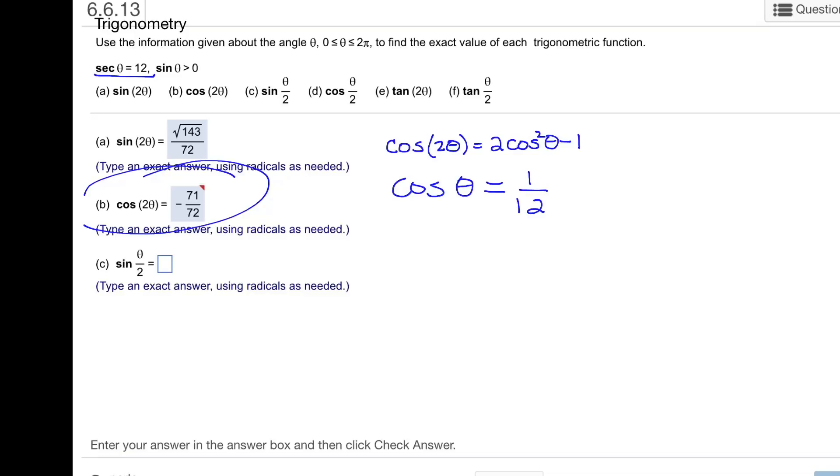So now I can just put that into the formula, and I've got 2 times 1 over 12 quantity squared minus 1.